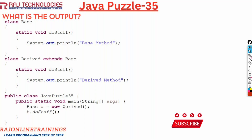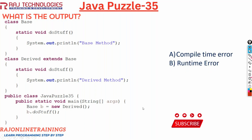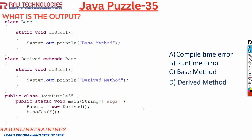That is the main question and the main objective of this puzzle. Let us see the options: it may be a compile-time error, it may be a runtime error, it is going to display 'base method', or the option is 'derived method'. Now let us understand what will be the output of this.